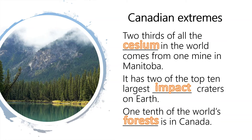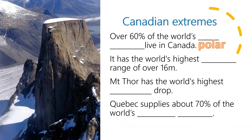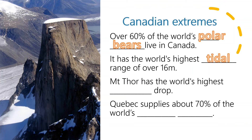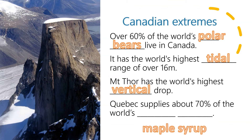One tenth of the world's forests is in Canada. Over sixty percent of the world's polar bears live in Canada. It has the world's highest tidal range of over 16 meters. Tidal range is the height difference between high tide and low tide, caused by gravitational forces of the moon and sun and the rotation of Earth. Mount Thor has the world's highest vertical drop. Quebec supplies about 70 percent of the world's maple syrup.